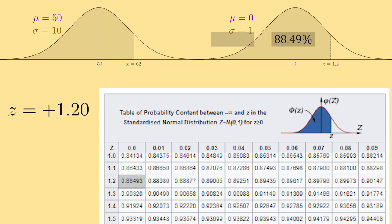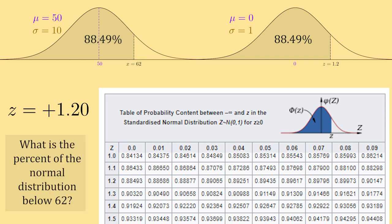At the same time, this then also tells us that 88.49% of the normal distribution with a mean of 50 and a standard deviation of 10 falls below 62. This is exactly what we're looking for. So essentially, we use the z-score in order to find the percent of our distribution below 62 here.